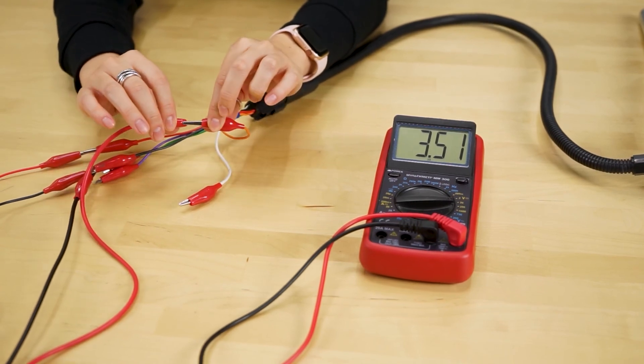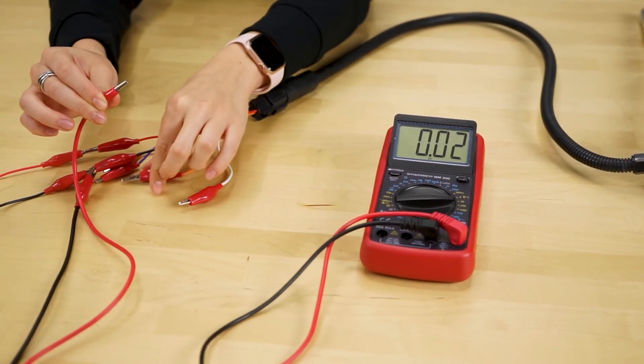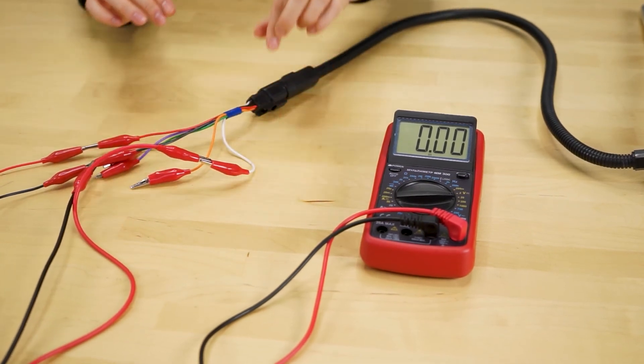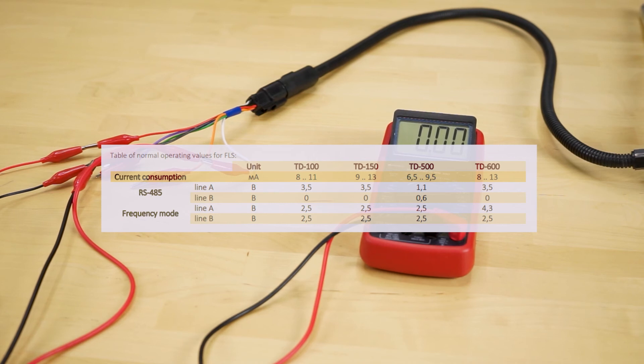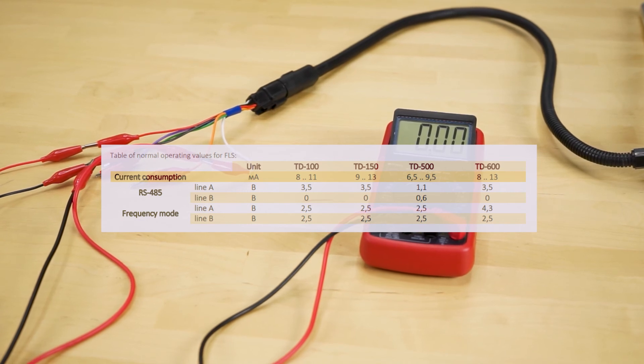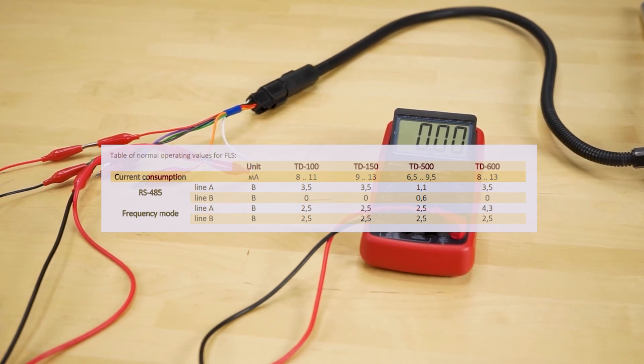If the readings on the multimeter do not coincide with the values of the table, you need to send the sensor to us for diagnostics. If the readings on the multimeter are fine but the device still will not connect, you need to try and update its firmware. We explain how this procedure is done in another video.